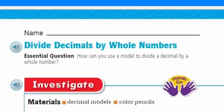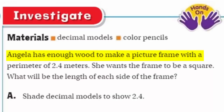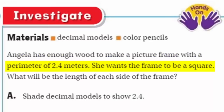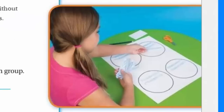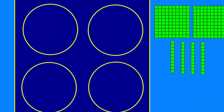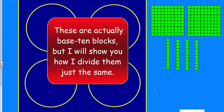That means if you have some materials at home, along with the video, you could go ahead and participate. We're going to be using decimal models and you could use some coloring pencils for some shading. Let's get started. Angela has enough wood to make a picture frame with a perimeter of 2.4 meters. She wants the frame to be a square. What will be the length of each side of the frame? Shade decimal models to show 2 and 4 tenths. So here I have my two wholes and my 4 tenths. So it said to shade the decimal models to show that, and this is what I've done.